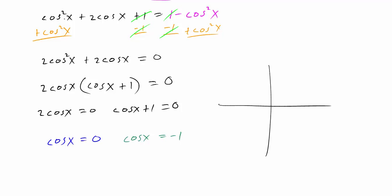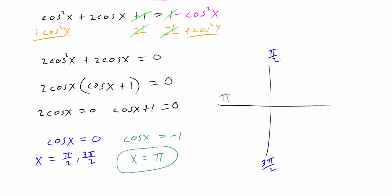Looking at the unit circle: cosine is our x value, so where is x equal to zero? That's at the top of the circle at pi over two, and the bottom at three pi over two. So x equals pi over two or three pi over two. And where is cosine equal to negative one? That occurs at pi. So x equals pi is our third solution. For this equation we have three solutions: pi over two, three pi over two, and pi.